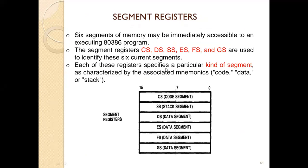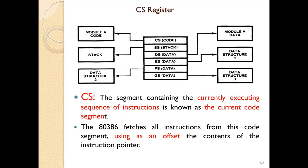Each of these registers specifies a particular kind of segment, as characterized by the associated mnemonics. The code segment is accessed for code, the stack segment accesses the stack, and the data segment accesses data. The segment containing the currently executing sequence of instructions is known as the current code segment. A code segment consists of the currently executing sequence of instructions.